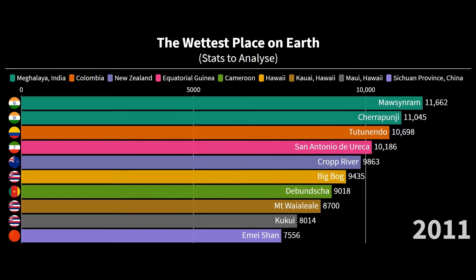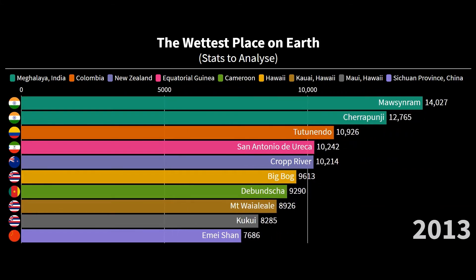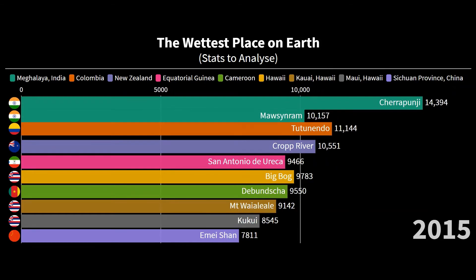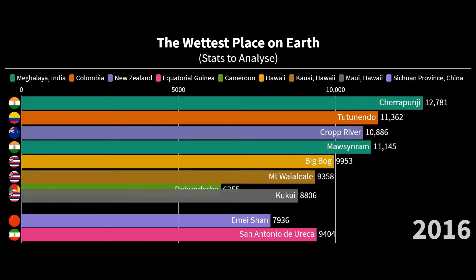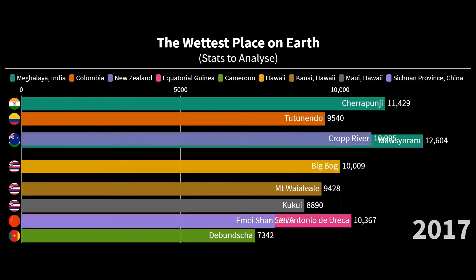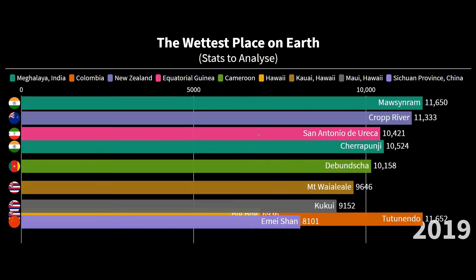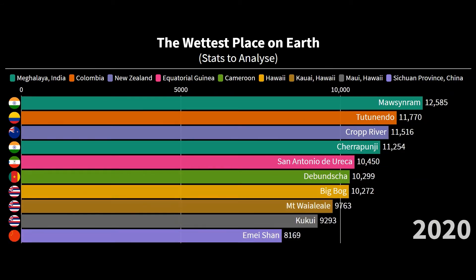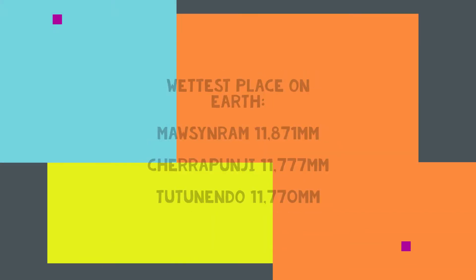Now, as we move towards the end of the bar race, the place where it rains the most — or the wettest place on Earth — as per the average annual rainfall over 50 years starting from 1970 to 2020, are: Mawsynram, Cherrapunji, and Tutunendo.